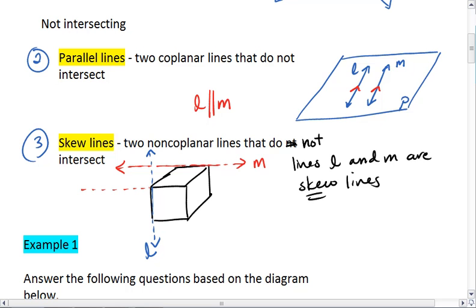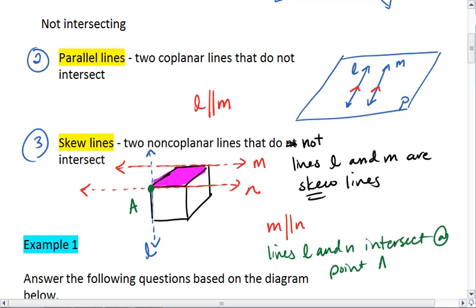An example of parallel lines in this picture would be line N here. Notice, M and N are in the same plane. They're both part of the top of this box. Lines M and N are parallel. We also see that lines L and N intersect at point A.